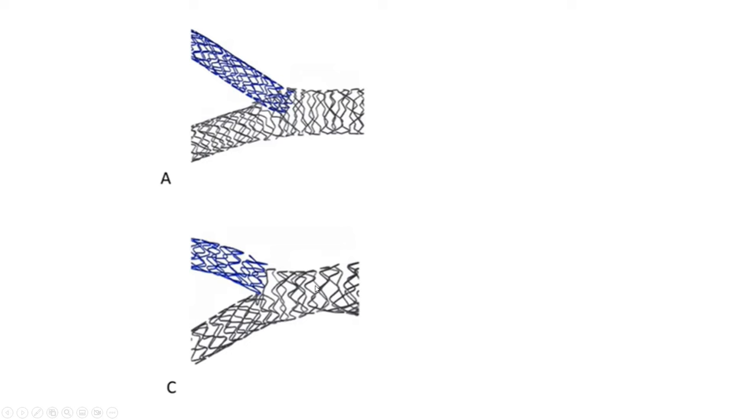When you have TAP with some protrusion, you may have difficulty advancing devices in the main branch distal to that neocarina, especially stents. If you cannot advance a balloon past the neocarina, you may be going through the neocarina stent struts — in this case, rewire your main vessel. Keep the first wire and advance a second wire. That first wire can serve to deflect the second wire away from the neocarina. You may even keep the first balloon hanging and rewire to advance another balloon — it will deflect you away from the neocarina.